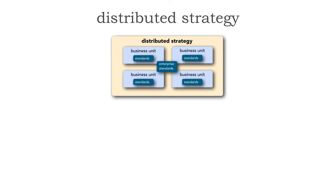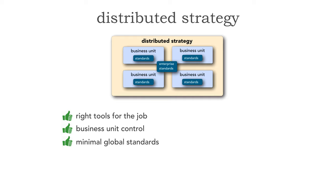Let's look at the trade-offs of the distributed strategy. First, the good aspects. It's definitely the right tools for the job, because each business unit — although adhering to some common standards — has the choice of whatever works for them. There's no central governing body dictating what they need to use, giving us a lot of good business unit control. We have minimally global standards and better overall satisfaction — both by users, because we can respond faster to requests, and within IT, because each business unit has specific technologies, architecture, methodologies, and processes that work for their particular context. This seems like nirvana.